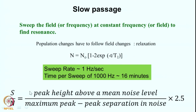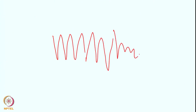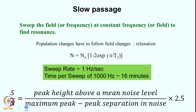When you look at the spectrum, the signal-to-noise ratio is the ratio of the peak height to the noise level. You measure the peak height above the mean noise level and the peak-to-peak separation in the noise and take their ratio. Multiplied by a factor of 2.5 for stochastic reasons, this is your signal-to-noise ratio. Typically this is very small because the NMR spectral sensitivity is quite low.